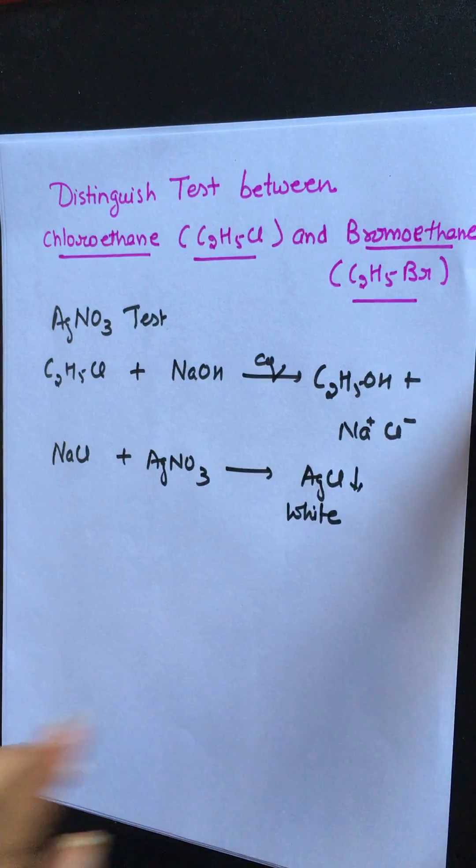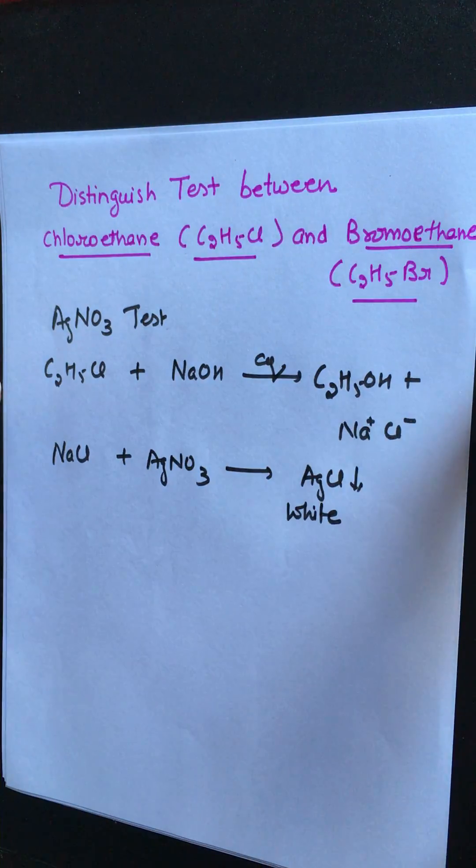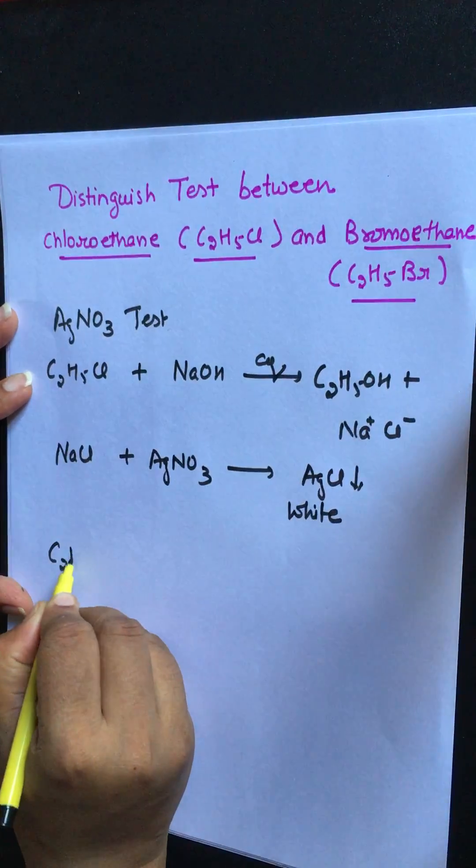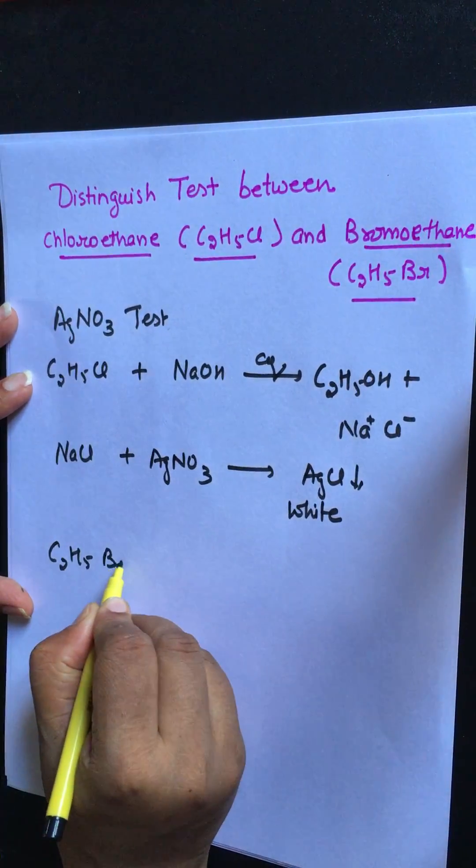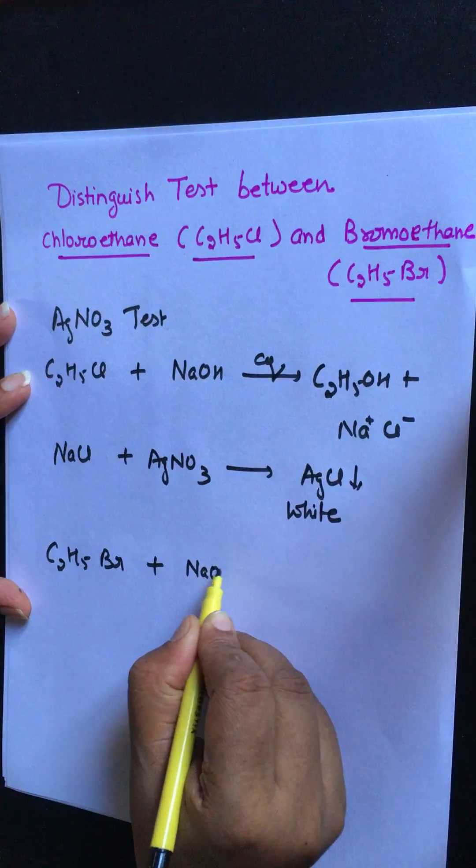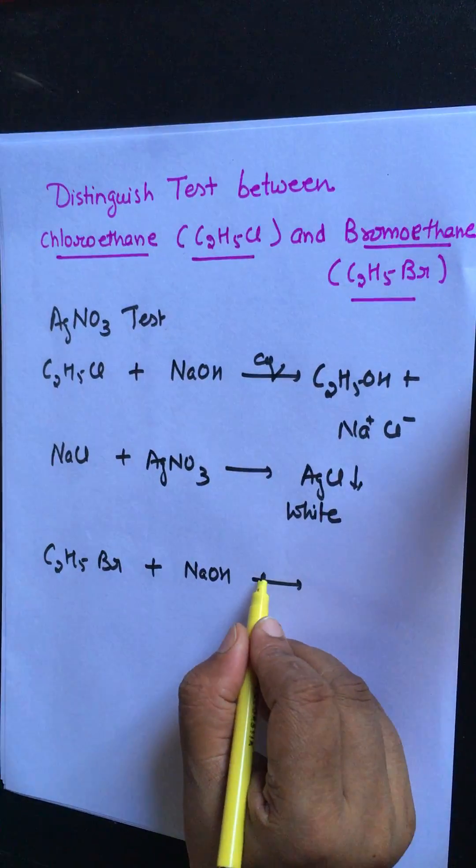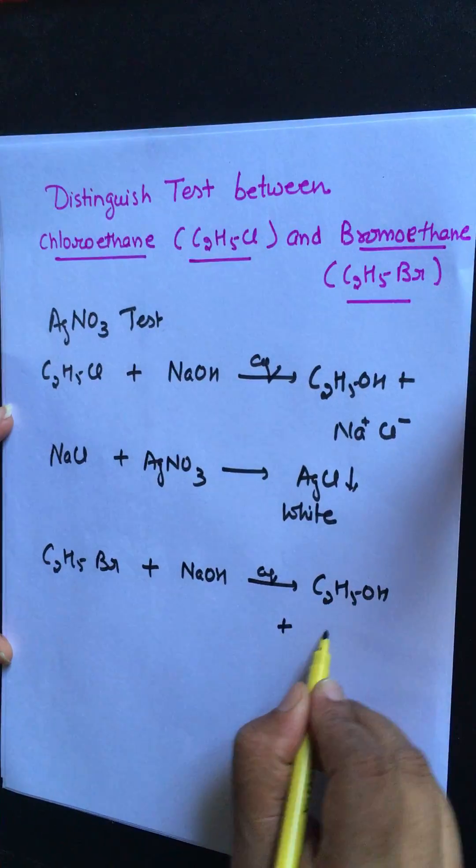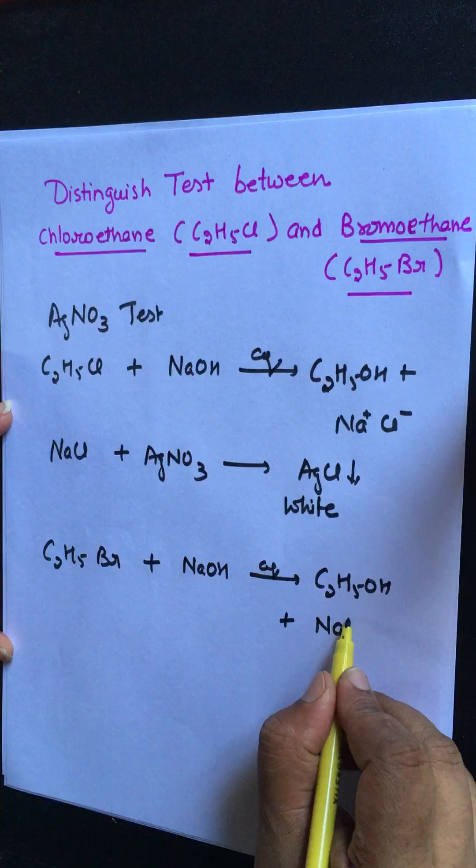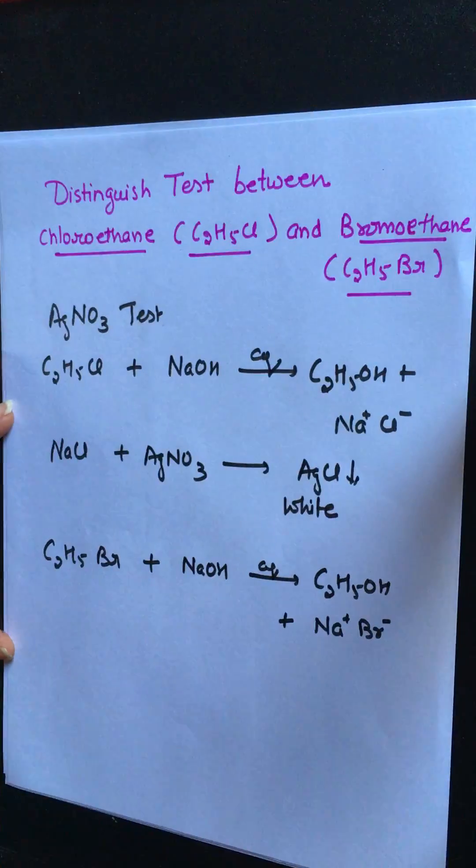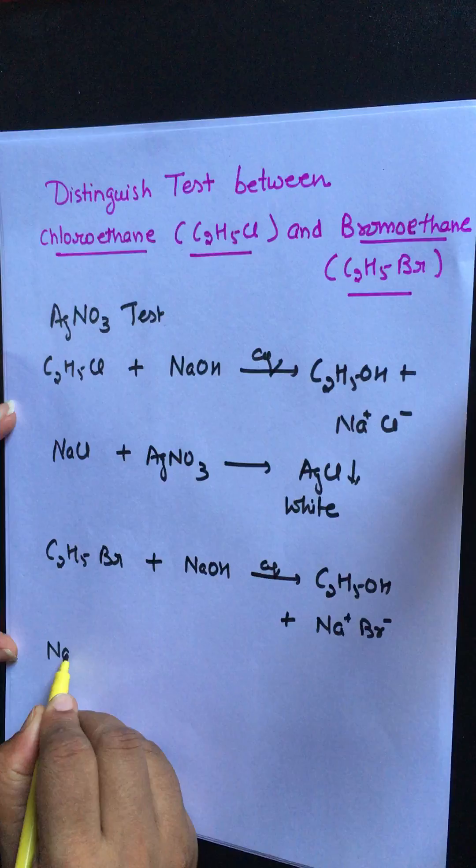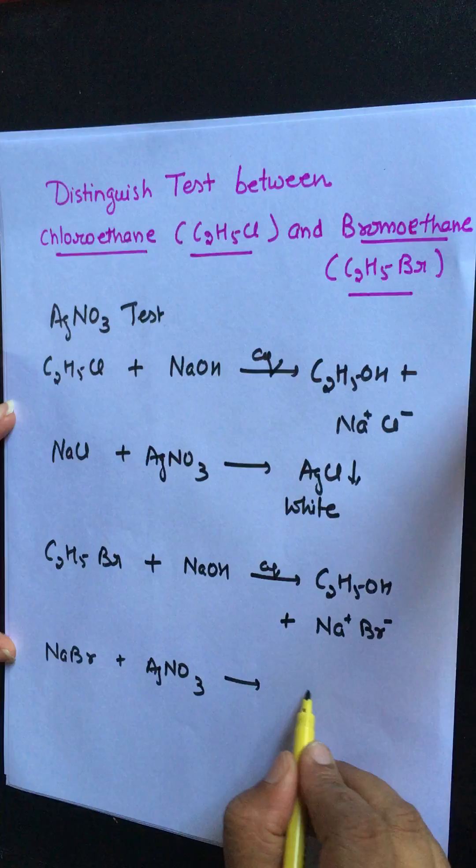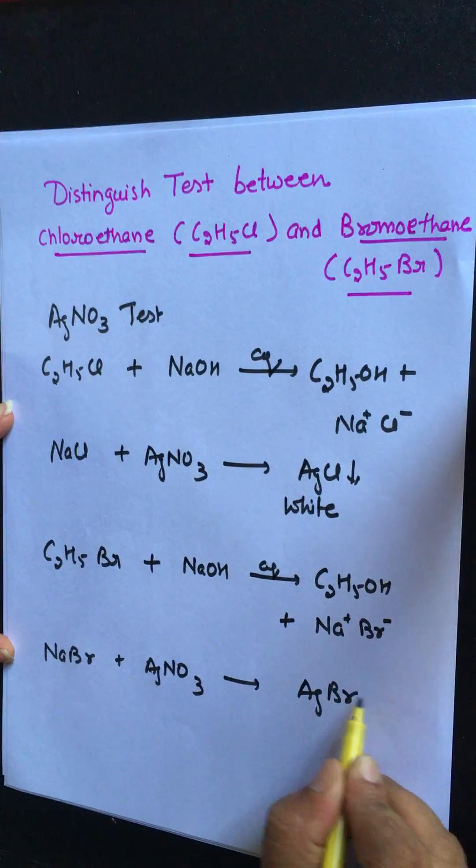This white color precipitate shows the presence of chloroethane. Now for bromoethane, ethyl bromide on reaction with aqueous alkali gives bromide ions in form of NaBr which on treatment with AgNO3 solution gives pale yellow precipitate of AgBr.